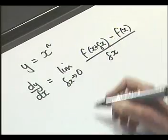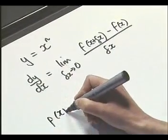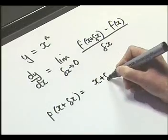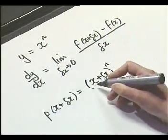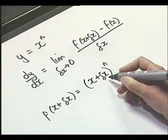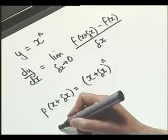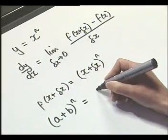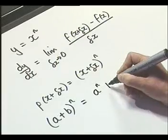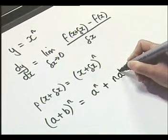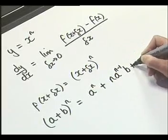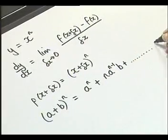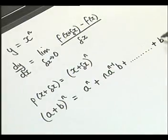So let's just look at this part first of all. Our f of x plus delta x is going to equal x plus delta x all to the power n. And this is a binomial. So what we're going to start by doing is actually just expanding a plus b to the power n. And that is a to the power n plus n times a to the power of n minus 1 multiplied by b plus, and there are lots of other terms in between, both containing powers of a and b, along to our final term, which is b to the power n.